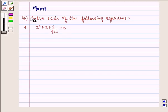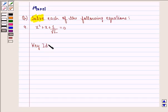In this question, we have to solve the equation x squared plus x plus 1 by root 2 equal to 0. Now, before starting with the solution, we see the key idea behind the question.